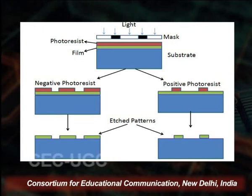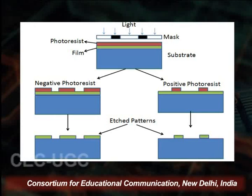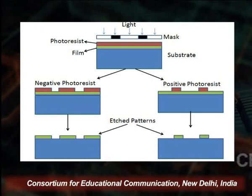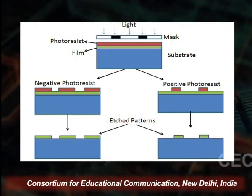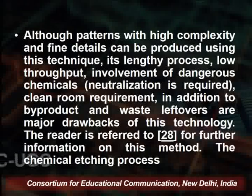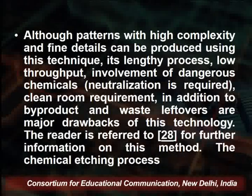On screen, light falls upon a mask with a substrate on which a film is deposited; then photoresist is developed above the film and the mask is placed. On the left-hand side is the negative photoresist, and on the right-hand side is the positive photoresist. In the case of the negative photoresist, the area will be etched; but with positive resist, only the particular area where the antenna is required is used, giving the final etched pattern. The positive side is better compared to the negative. Although patterns of high complexity and fine detail can be produced using this technique, it is a slow process with low throughput and uses very dangerous chemicals, and is not cost-effective.